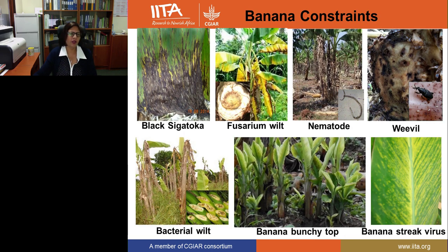But even though it's an important crop, it has real constraints — diseases and pests are one of them, and I would say they are the main constraints. There are several diseases like fungal diseases, black sigatoka, and fusarium wilt. There are also bacterial and viral diseases like bunchy top virus and the banana streak virus, and there are pests like nematodes.